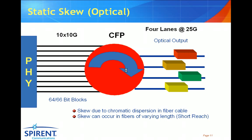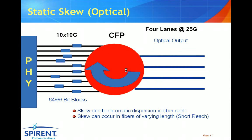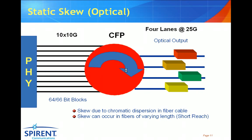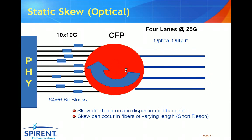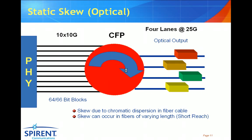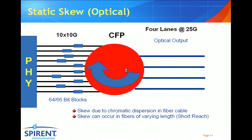On the other side of the CFP — the optical side — we can have optical skew, and skew can occur for a number of different reasons. It can be due to chromatic dispersion in the fiber cable: different lambdas or wavelengths will propagate down the fiber at slightly different rates, creating differences in arrival times. Skew can also occur in fibers of varying length. Under some transmission systems, multiple fibers could be used for each optical output, and if these fibers vary in length, this could also create skew.